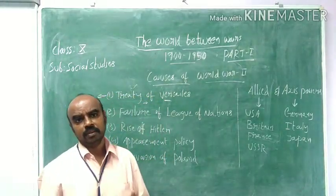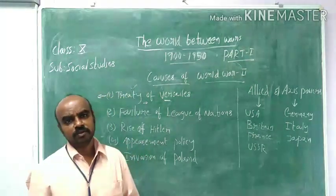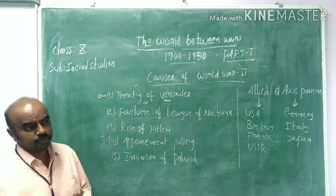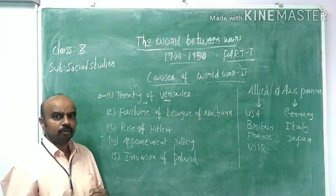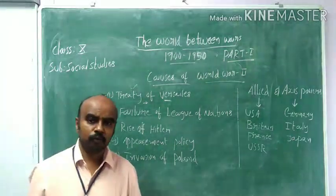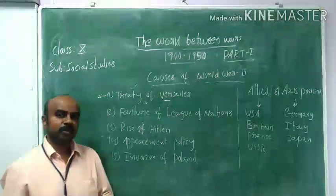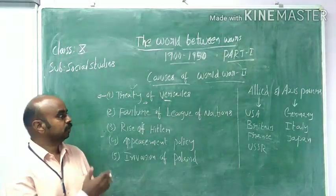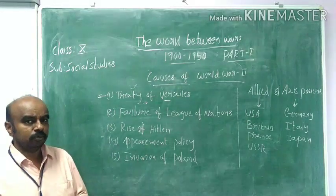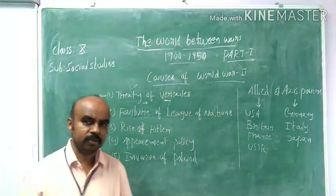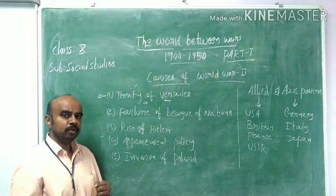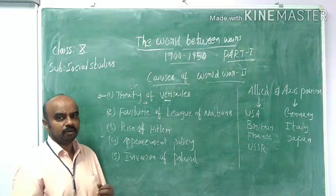The first aspect is territorial. As per the territorial provision, Germany was asked to forsake or surrender all their colonies to the allied powers — that is, Britain and France. That is what we call the territorial provision — Germany was asked to surrender all their colonies.